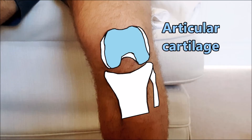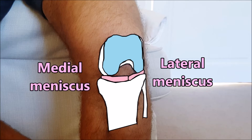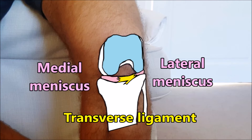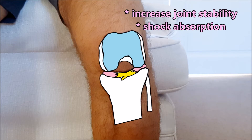These are the menisci — two fibrocartilaginous structures, namely the medial meniscus and lateral meniscus. Anterior to the menisci is the transverse ligament of the knee. The functions of the menisci are to increase joint stability and to act as shock absorbers.